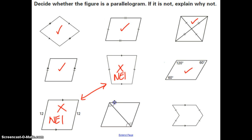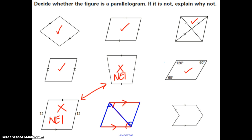This next one: we have a pair of congruent angles. If you remember back to Unit 3 when we talked about parallel lines, the alternate interior angles converse lets us say those two lines are parallel. Then, looking at another pair of congruent angles, using the alternate interior angles converse again, we have yet another pair of parallel lines. By the definition of a parallelogram, opposite sides are parallel, so it is a parallelogram.